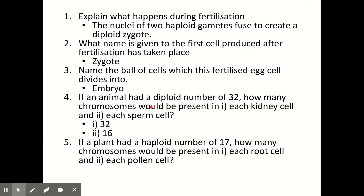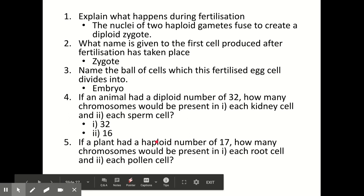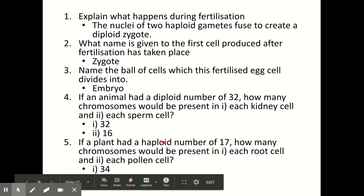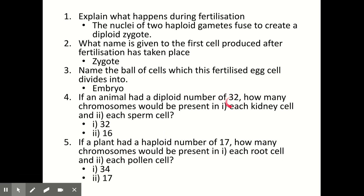If a plant cell has a haploid number of 17, note that they've given you the haploid number, not the diploid number. A root cell is not a gamete — it's a normal plant cell, so it's diploid, which means we double 17 to get 34 chromosomes. A pollen cell, on the other hand, is a gamete and gametes are haploid, so the pollen cell would have 17 chromosomes — the same as the haploid number given. Be careful when reading these questions: check whether they give you the haploid or diploid number, then work out whether the cell in question is a normal cell or a gamete.